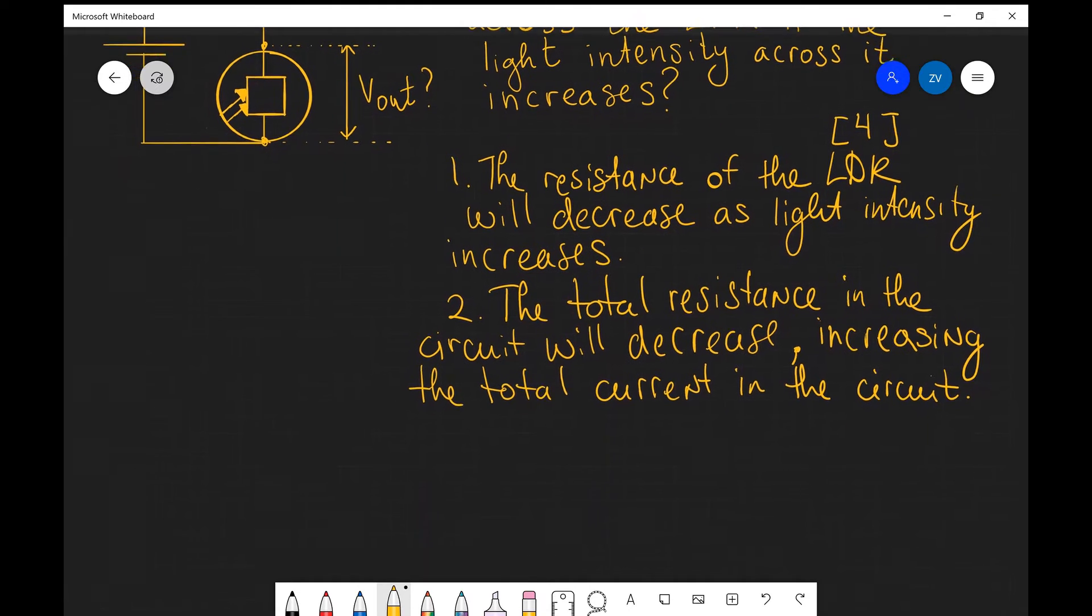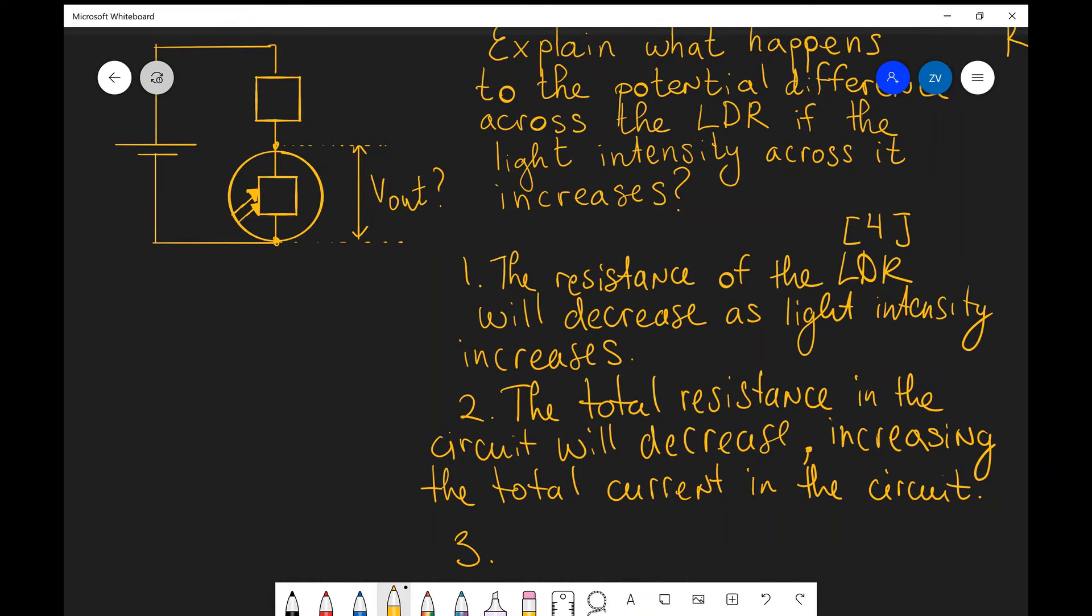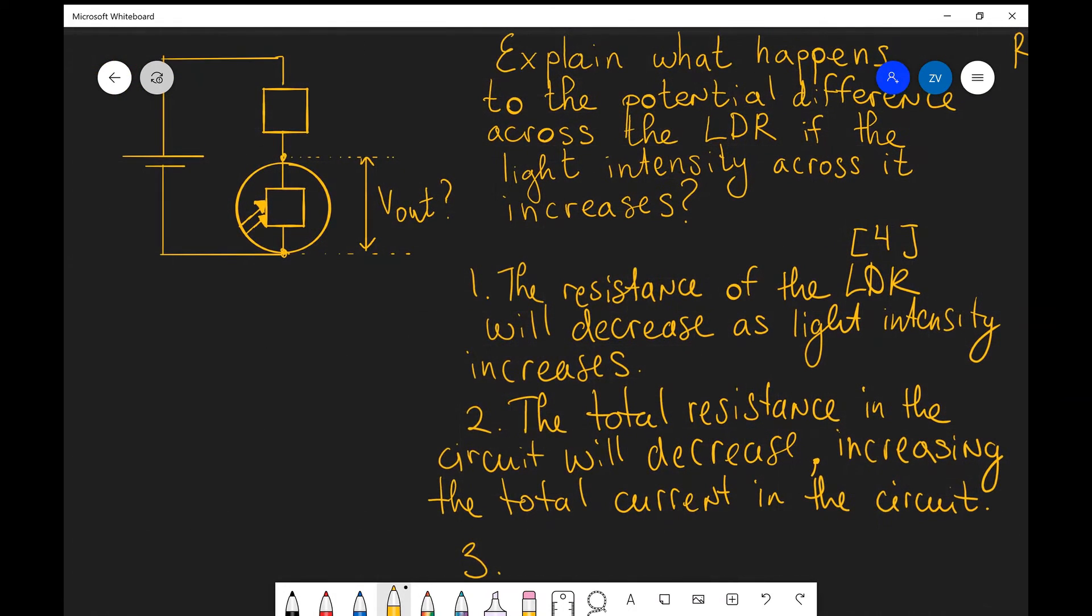Perfect. From point 2 we always need to mention what's happening to the PD across the fixed resistor. So let's have a look over here. This is our fixed resistor. Now I'm just going to do this in a different color because this is really important. Let's imagine that our fixed resistor we're going to call that the F for fixed, that's going to equal IR so that's the current in the circuit multiplied by the resistance which is fixed.